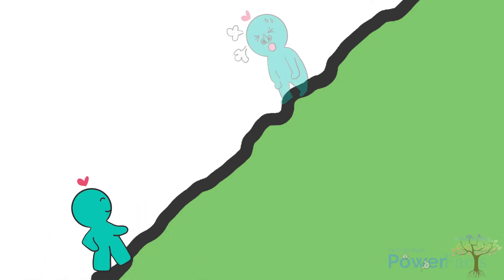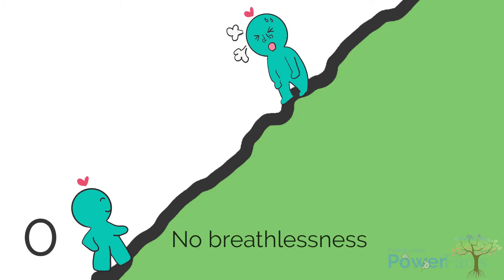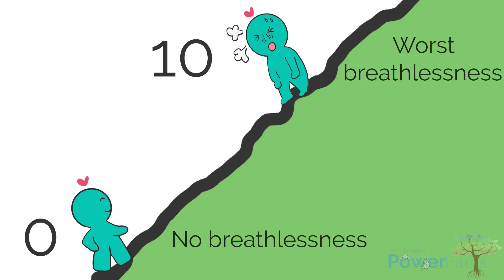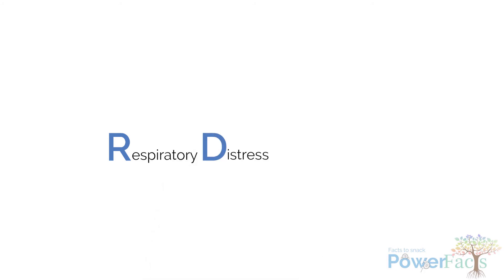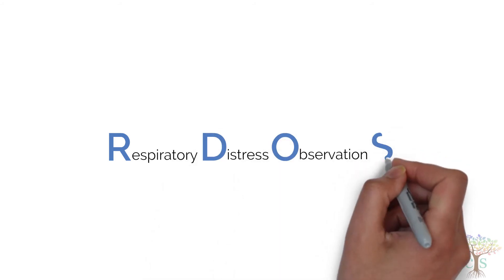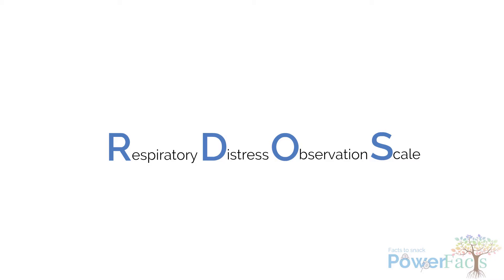That is the Numerical Rating Scale. Similar to the Symptoms and Problems Assessment Tool, we have patients rate their dyspnea from a scale of zero, which is no breathlessness, to ten, which is worst breathlessness. However, if a patient is unable to communicate the severity of their dyspnea, we can use the Respiratory Distress Observation Scale, or RDOS for short.